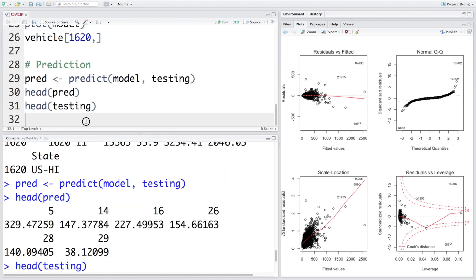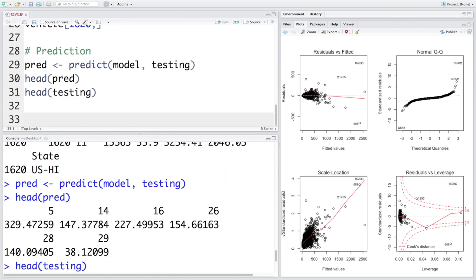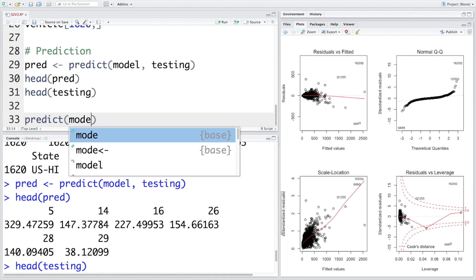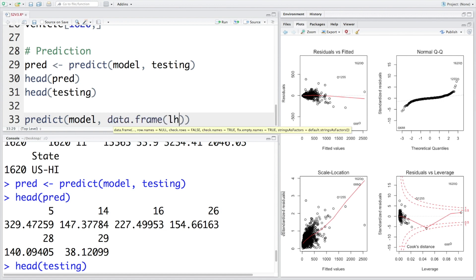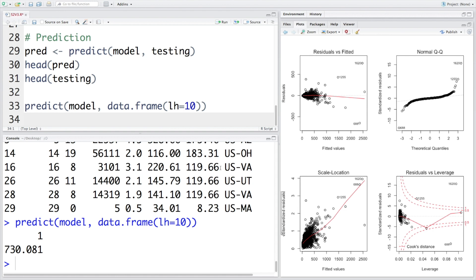If you want to make a prediction for a single data point, we can use predict and our model. We can provide a data frame where LH equals 10. So if labor hours is 10, based on this model, what should be labor cost? If you run this line, it says that if labor hours is 10, the predicted labor cost is about $730.08. So this is how we can make a prediction using the model.